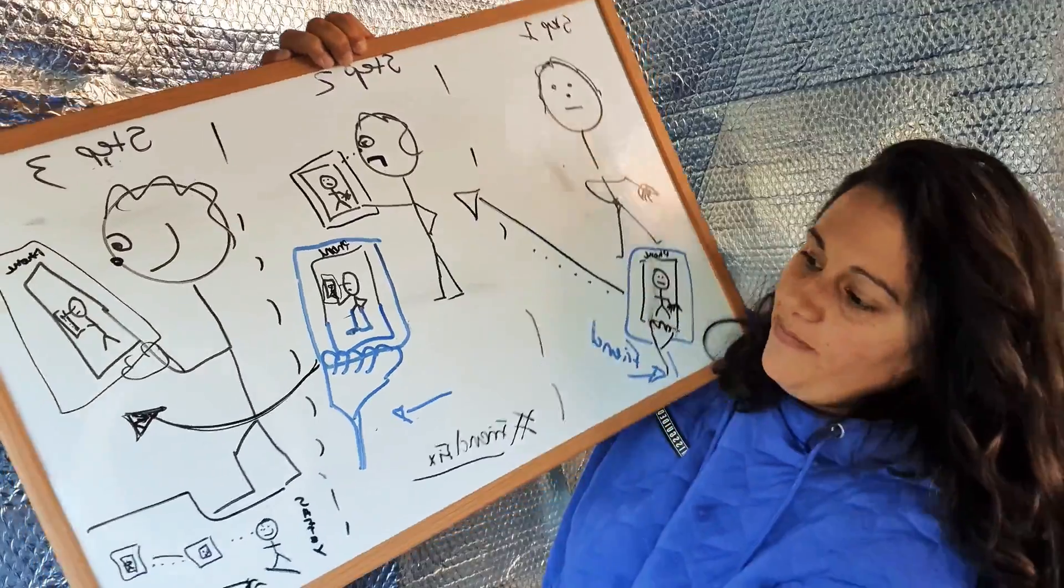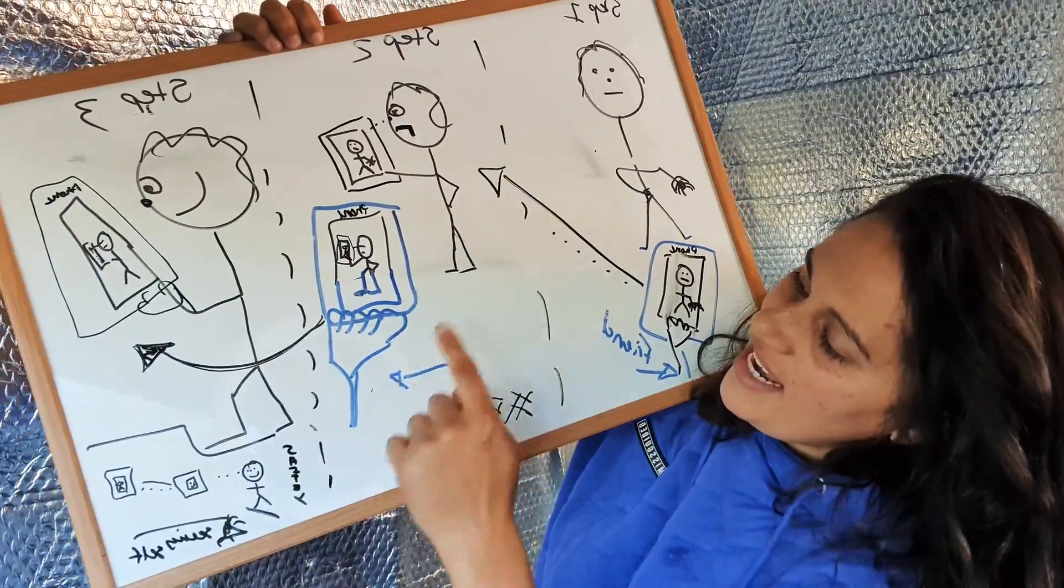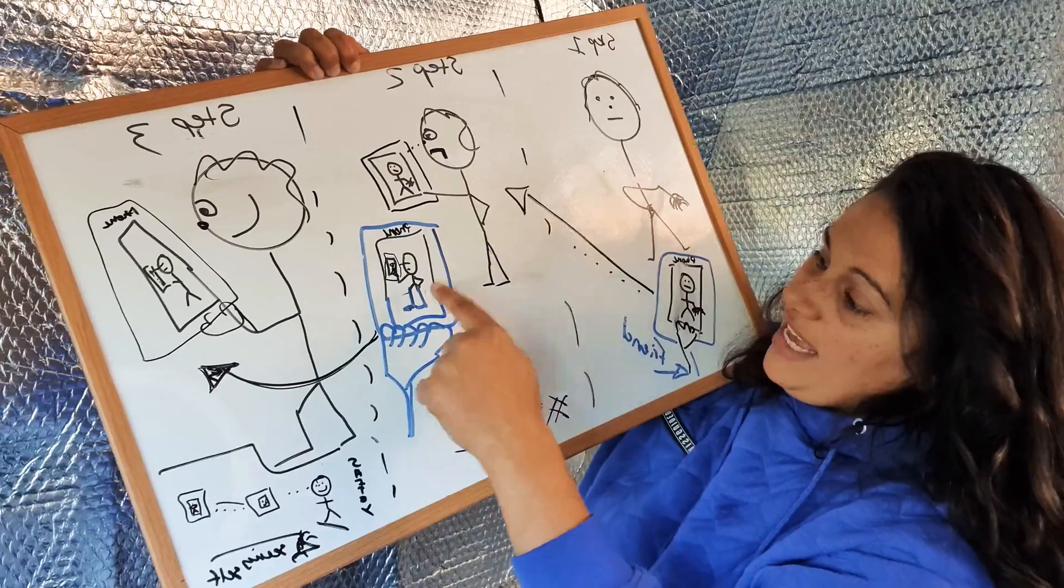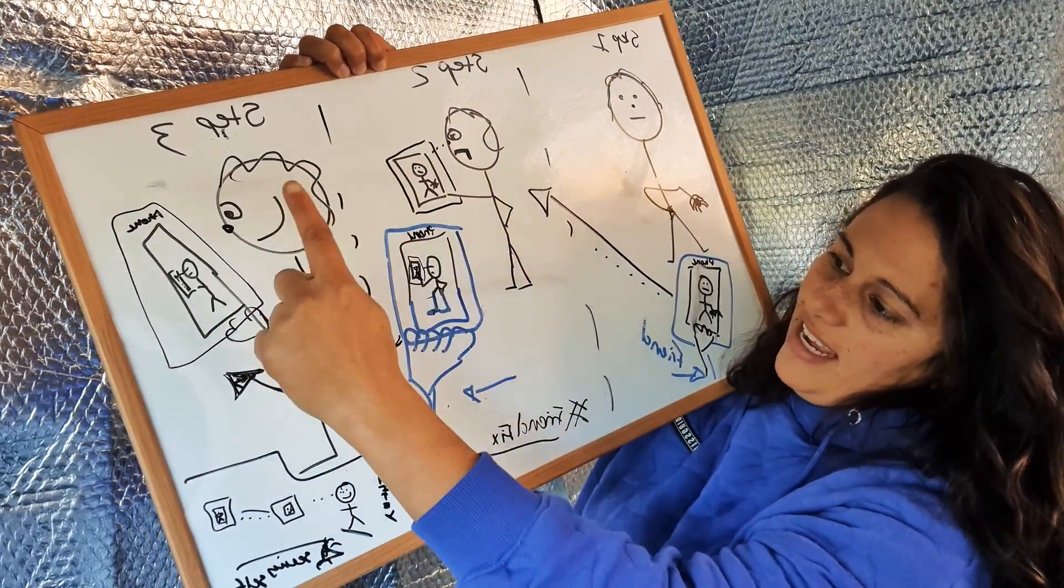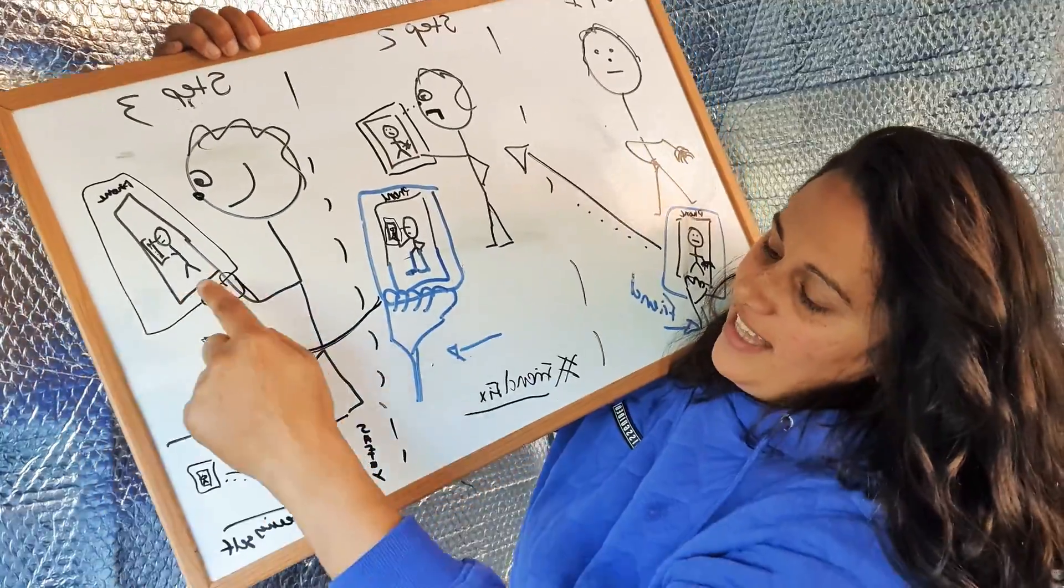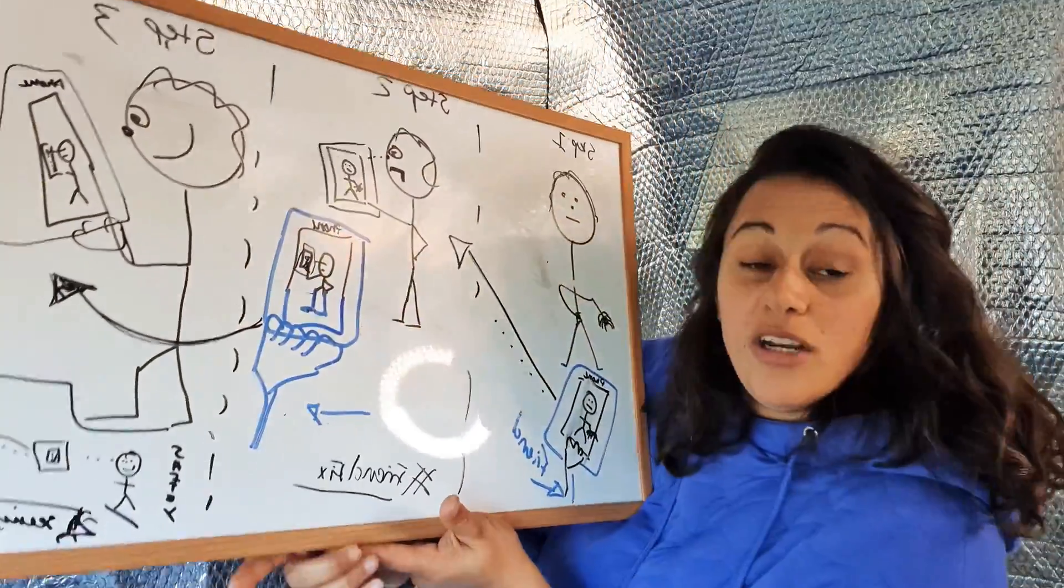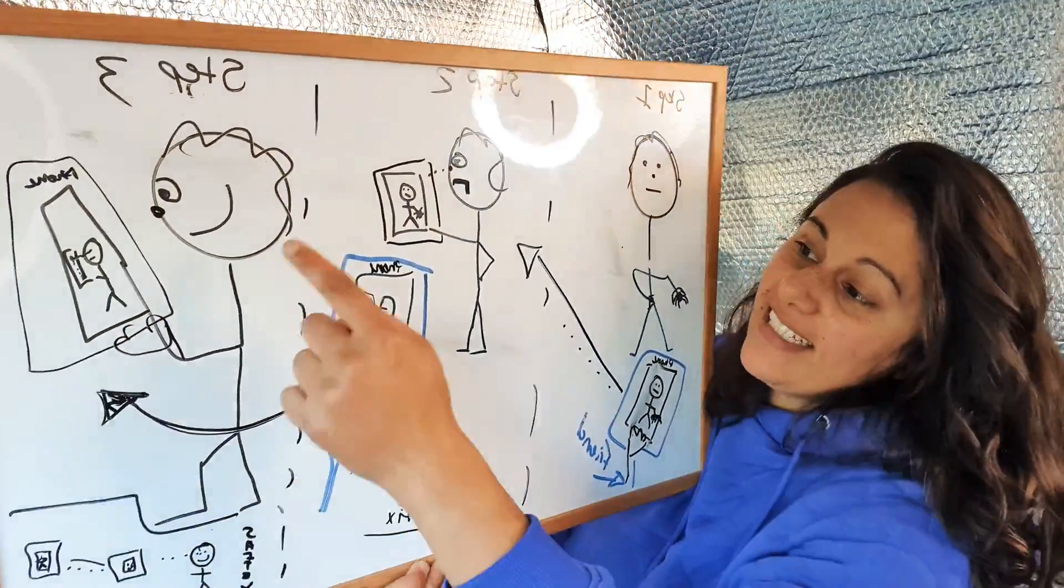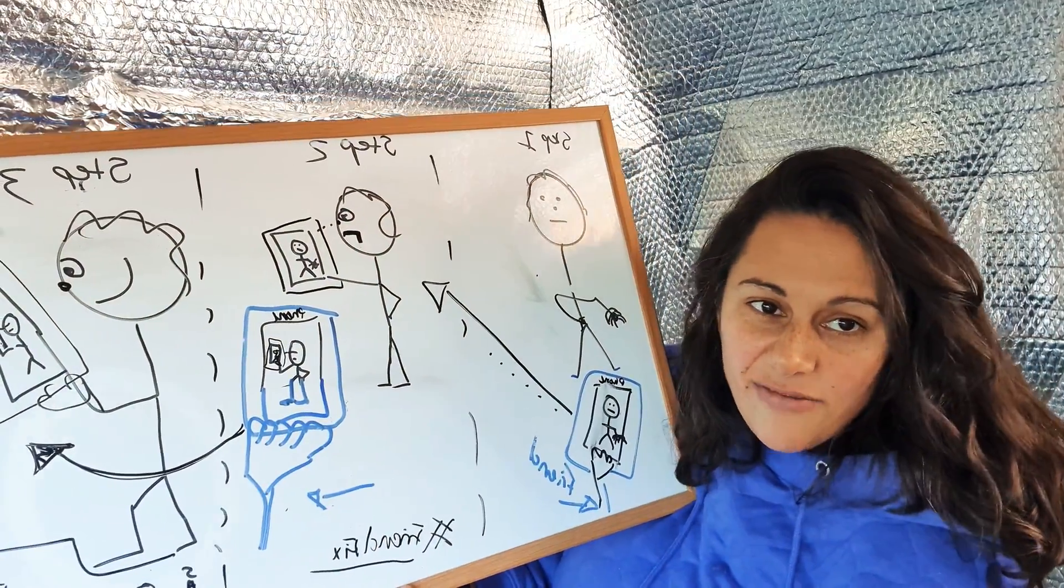So step two. Step three: this is a person with phobia here. Give this to this guy and get him to watch himself watching himself watching himself. That's it.